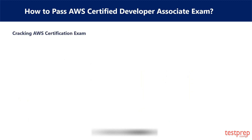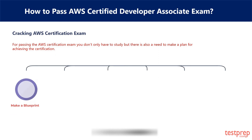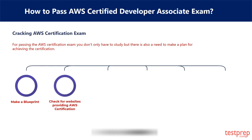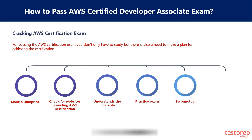Cracking the AWS Certification Exam. For passing the AWS certification exam, you don't only have to study — there is also a need to make a plan for achieving the certification. First, make a blueprint. Second, check for websites providing AWS certification. Third, understand the concept. Fourth, practice exam and test. Fifth, be punctual. Sixth, give the exam.